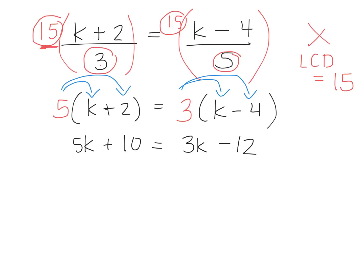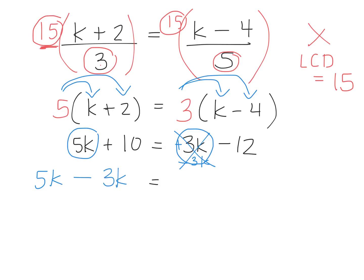Find the like terms — which terms are like 5k? I have 5k on the left side of the equation. The positive 3k is on the right side, but I want it removed from the right side. The opposite of positive 3k is negative 3k, so 5k minus 3k. Negative 12 stays, but I need to get rid of plus 10, so minus 10.